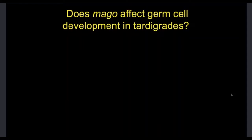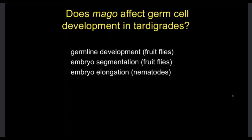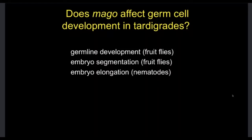One of the genes I focus on is called MAGO. MAGO is a really highly conserved gene — almost every animal has a protein called MAGO, and if you compare the protein from flies, humans, worms, etc., they are all really, really similar to one another. We can identify specific roles that MAGO plays in other animals. For example, in fruit flies, MAGO is required to make germ cells. We have evidence that if you don't have MAGO, fruit flies cannot make germ cells anymore. MAGO is also required for segmentation — for making the abdominal segments in fruit flies.